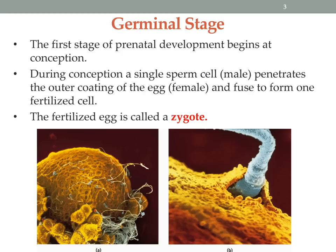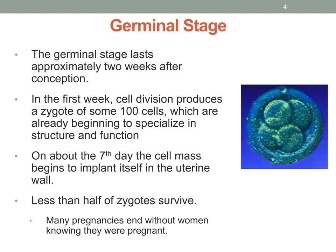We'll begin with the germinal stage. This is the first stage of prenatal development and it begins at conception. During conception, a single sperm cell from the male penetrates the outer coating of the egg and these fuse to form a fertilized cell. This fertilized egg is called a zygote. You can see here a picture of a zygote after the cells have begun to divide.